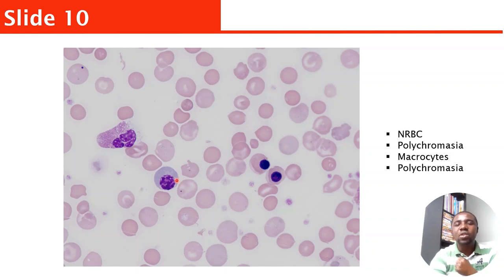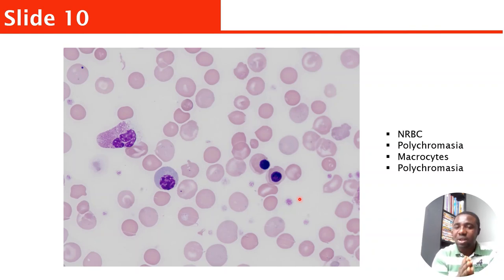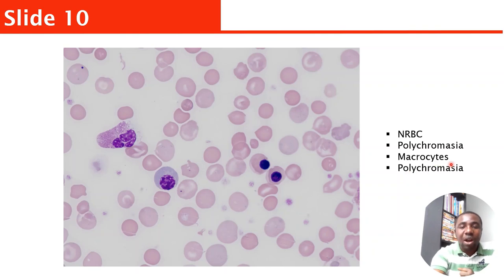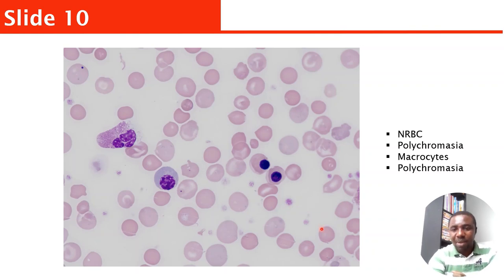This slide shows nucleated red blood cells. Once you see a significant amount of nucleated red blood cells, it means the bone marrow is under stress — it shouldn't happen normally, although it can be common in newborn babies. You can see macrocytes, polychromasia, and nucleated red cells. There are also spherocytes here, so you cannot rule out hemolysis or macrocytic anemia.